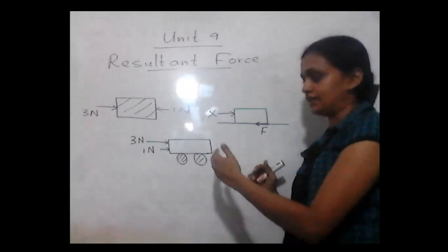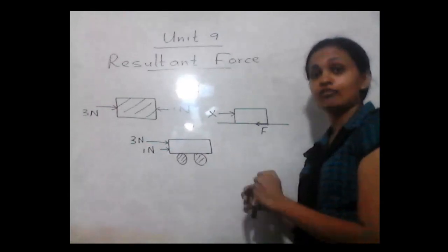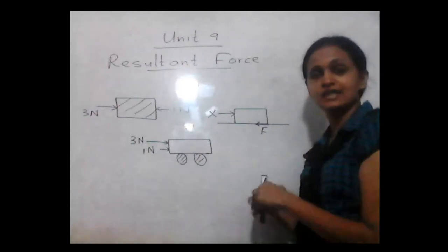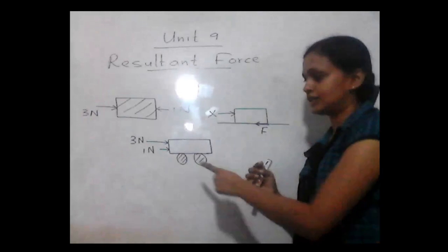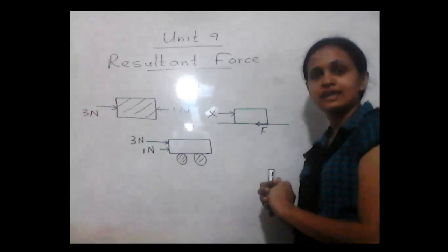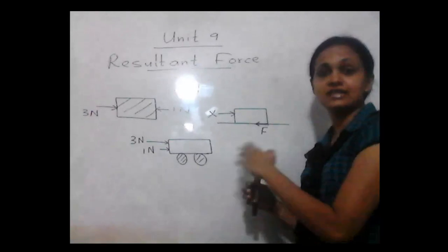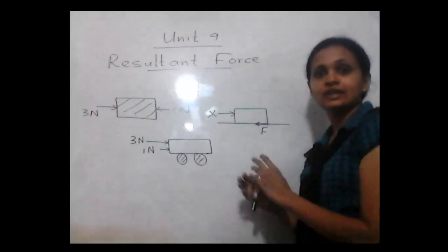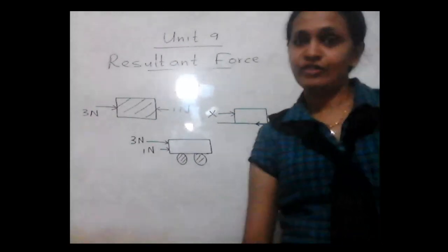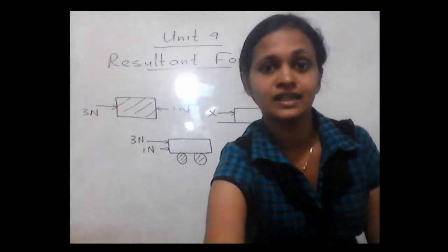For example, when two forces are applied in the same direction on this trolley, if we apply a single force equal to the sum of these two forces, that will be the resultant force applied on the trolley. The resultant force is the single force that can be applied instead of a set of forces applied on an object to come up with the same result. First, we will discuss different instances where we can talk about a resultant force.